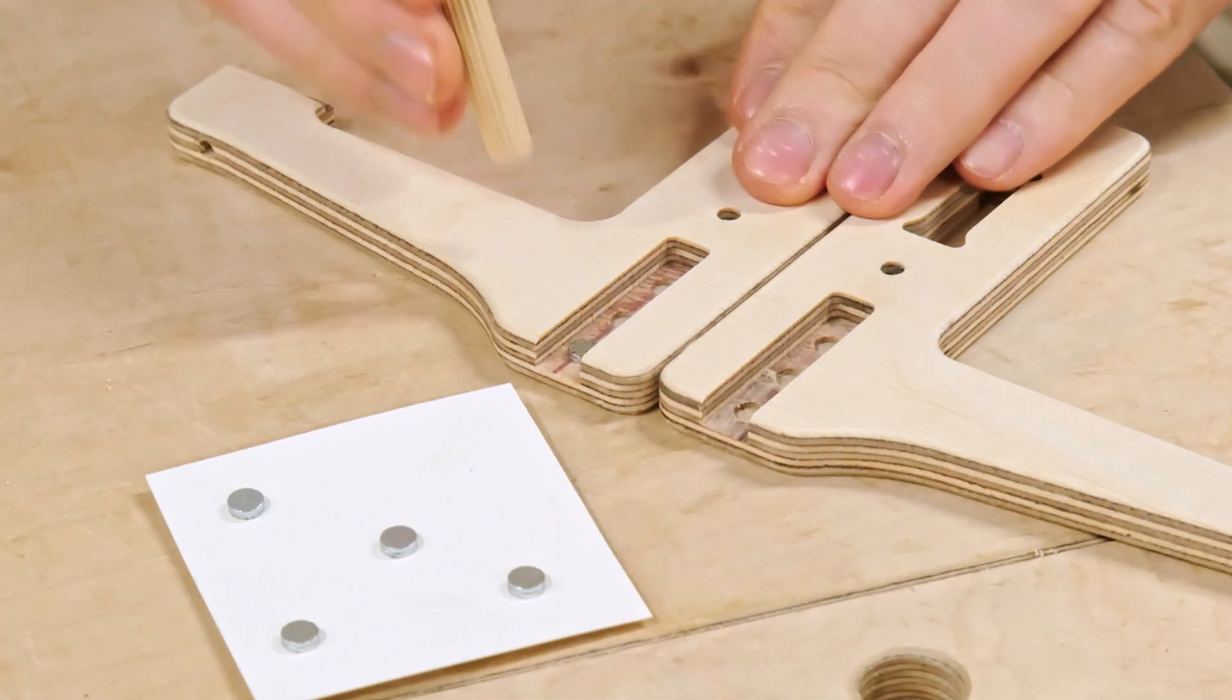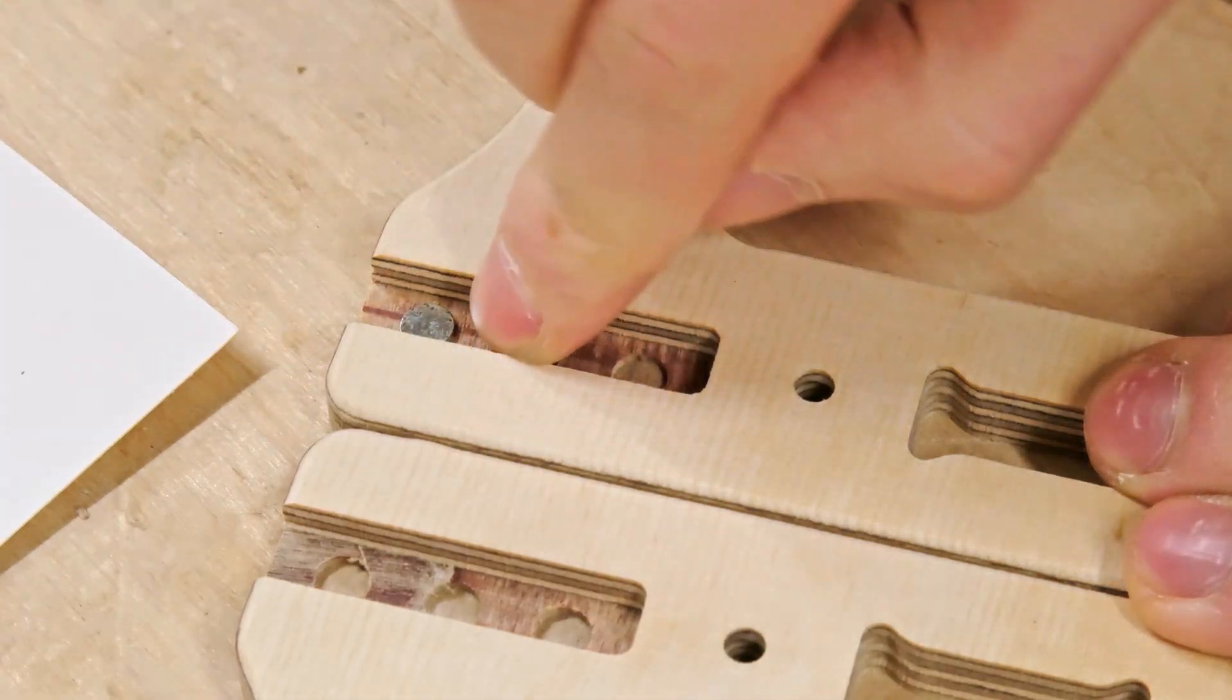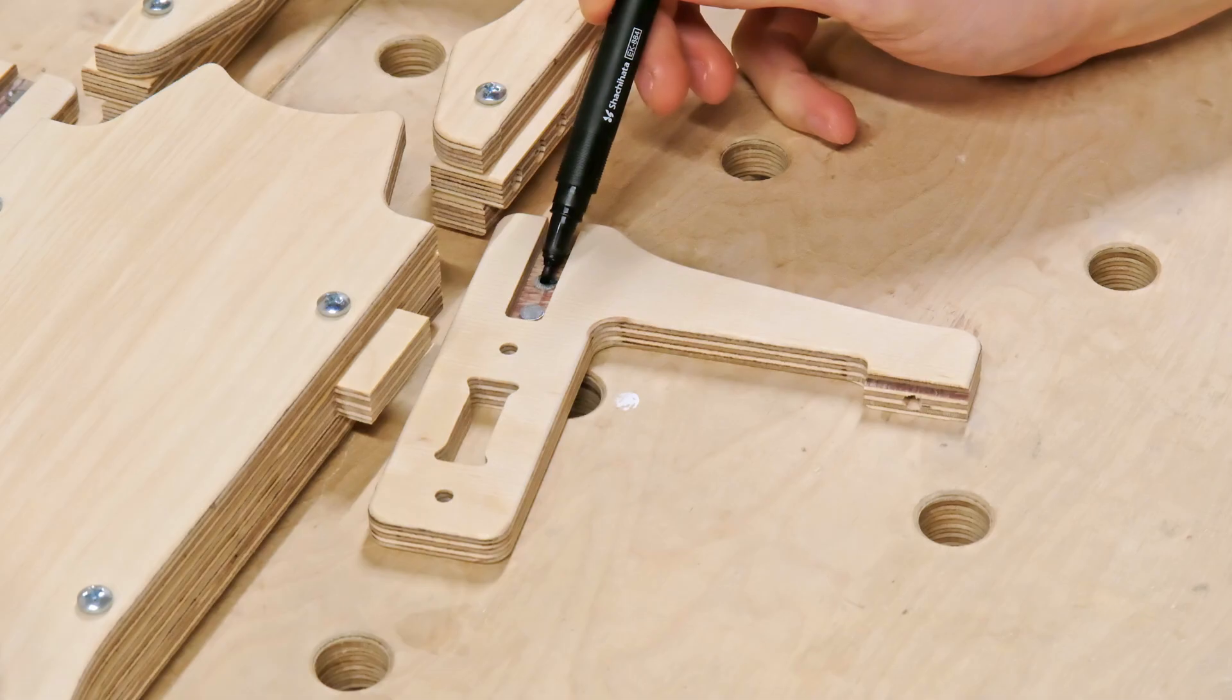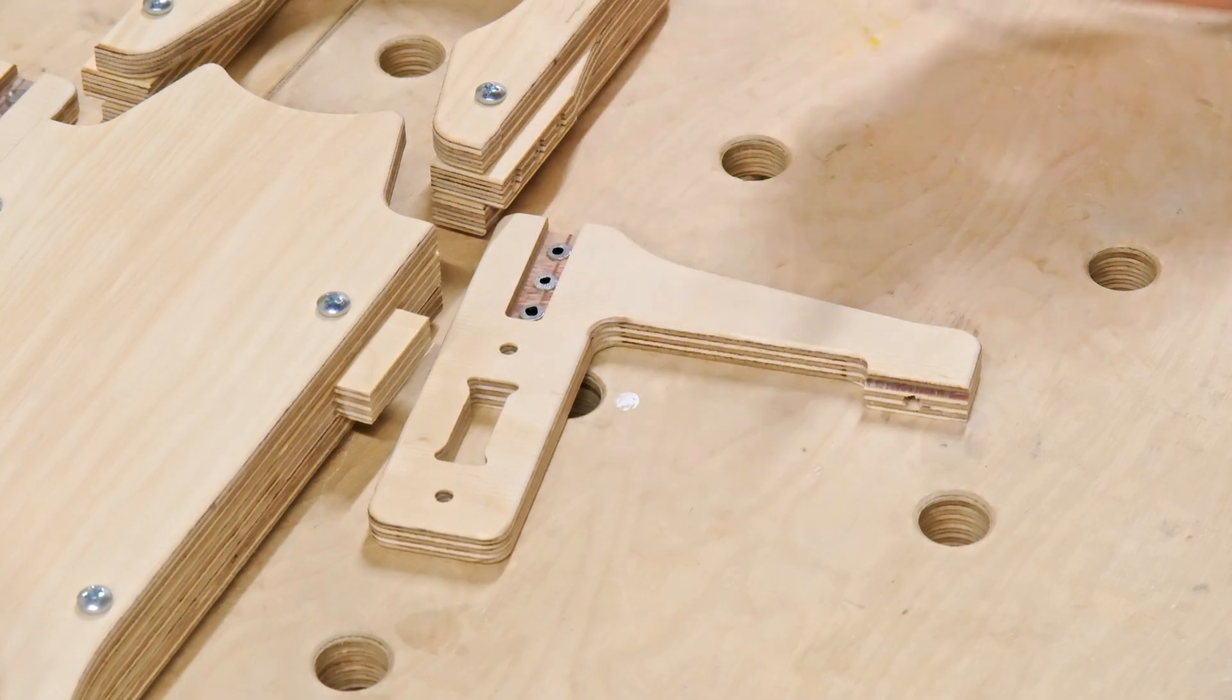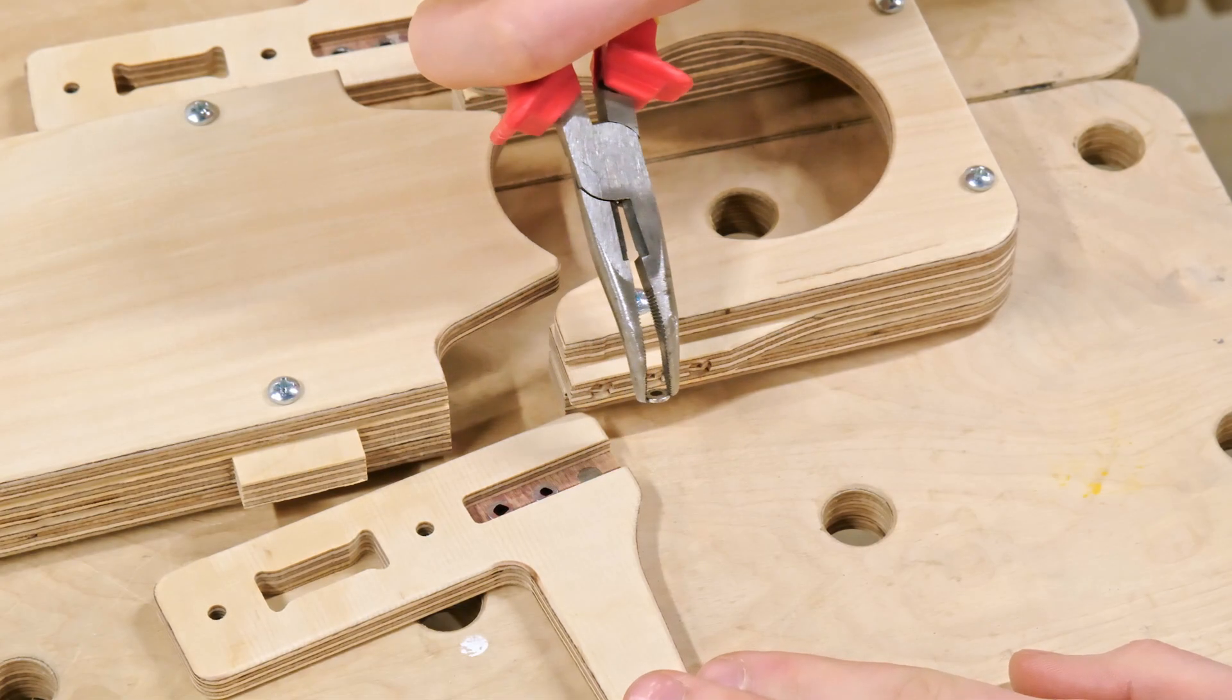When the holes are drilled, we can carefully insert the disc magnets into holder arm pockets. To make sure the magnet poles match on the dust shoe and the mounting components, I'm marking the surface of each magnet and then carefully place each of the magnet discs in its position.